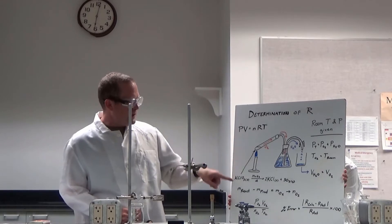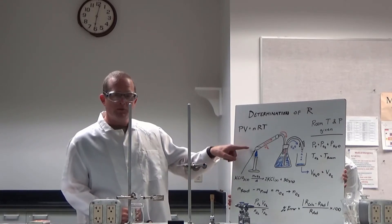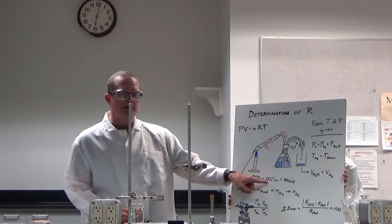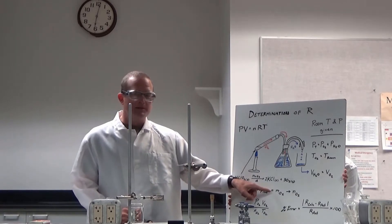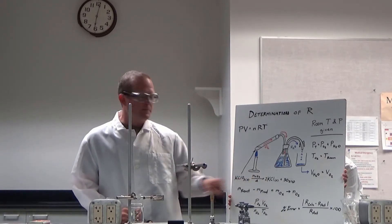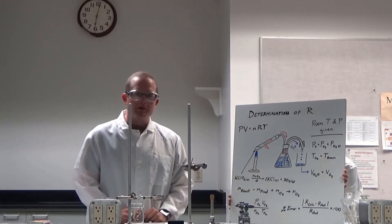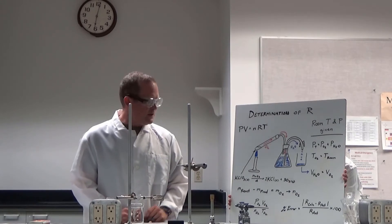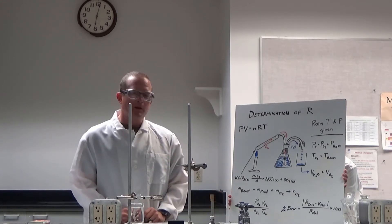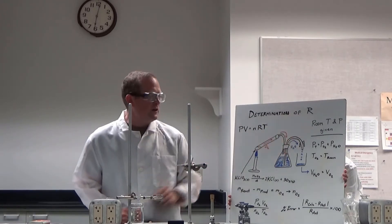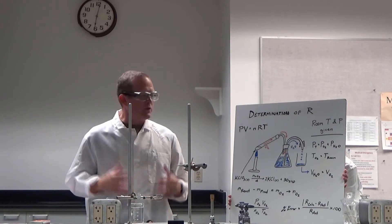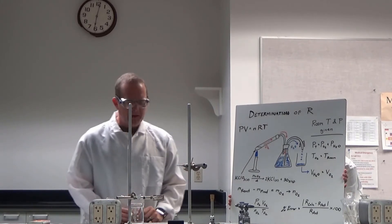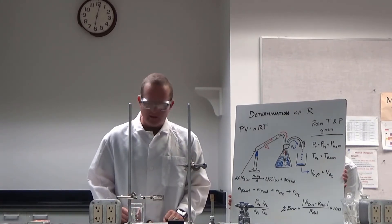Also, we can measure the mass of the reactants in the ignition tube and the mass of the products in the ignition tube, and the difference between the mass of the reactants and the products should be the mass of the oxygen gas produced. With that, we can determine the moles of the oxygen gas produced, and through that we can determine the gas constant. The pressure and the temperature are known from the room temperature and pressure. So let's go ahead and set this lab up.